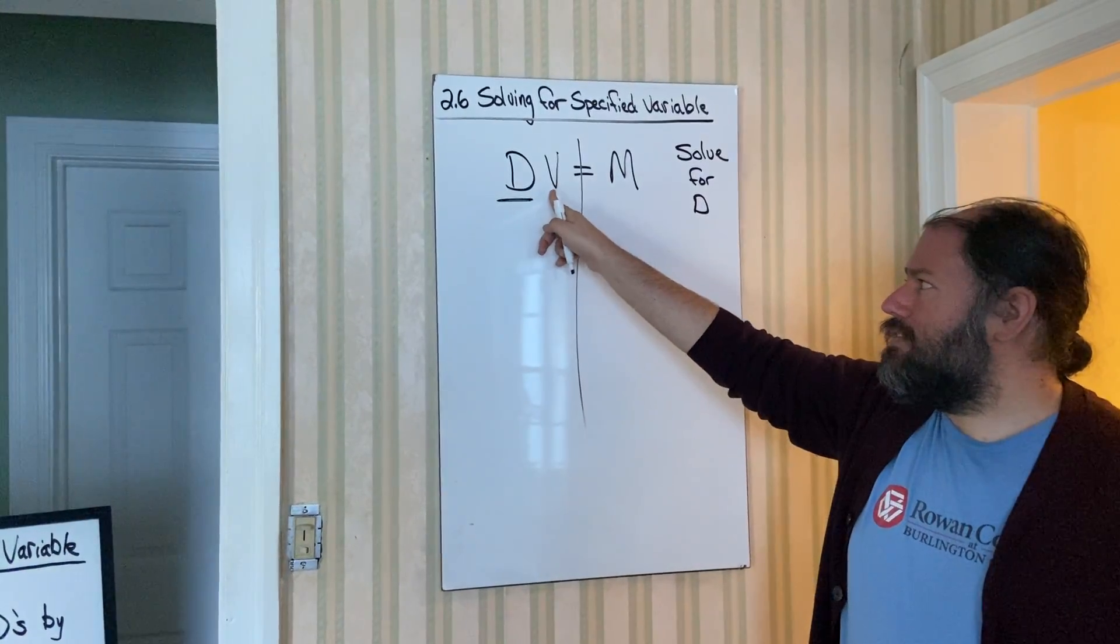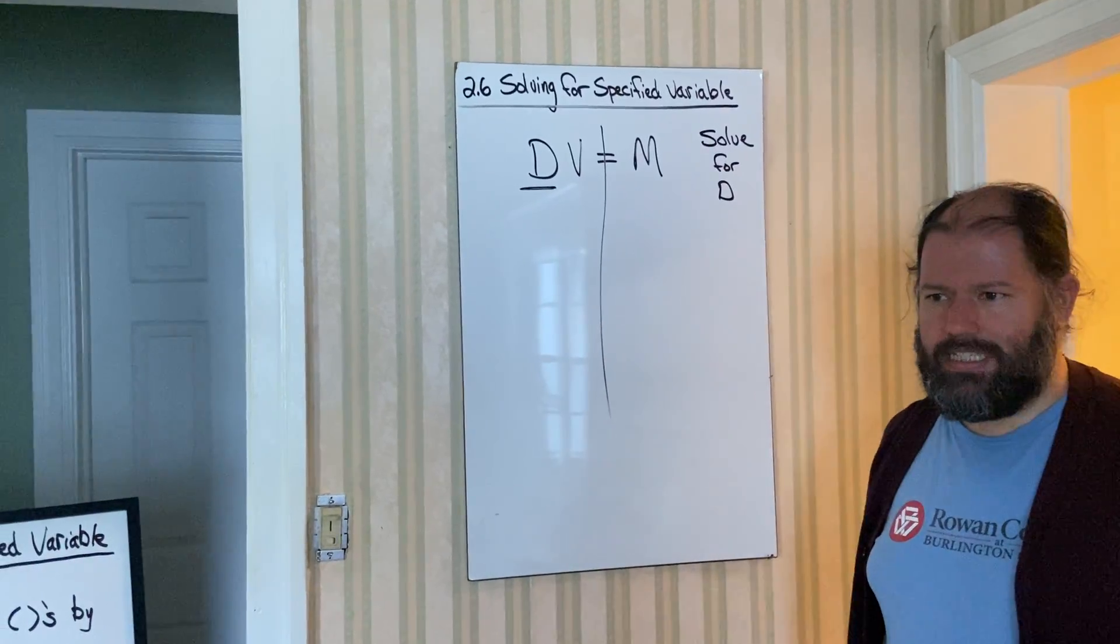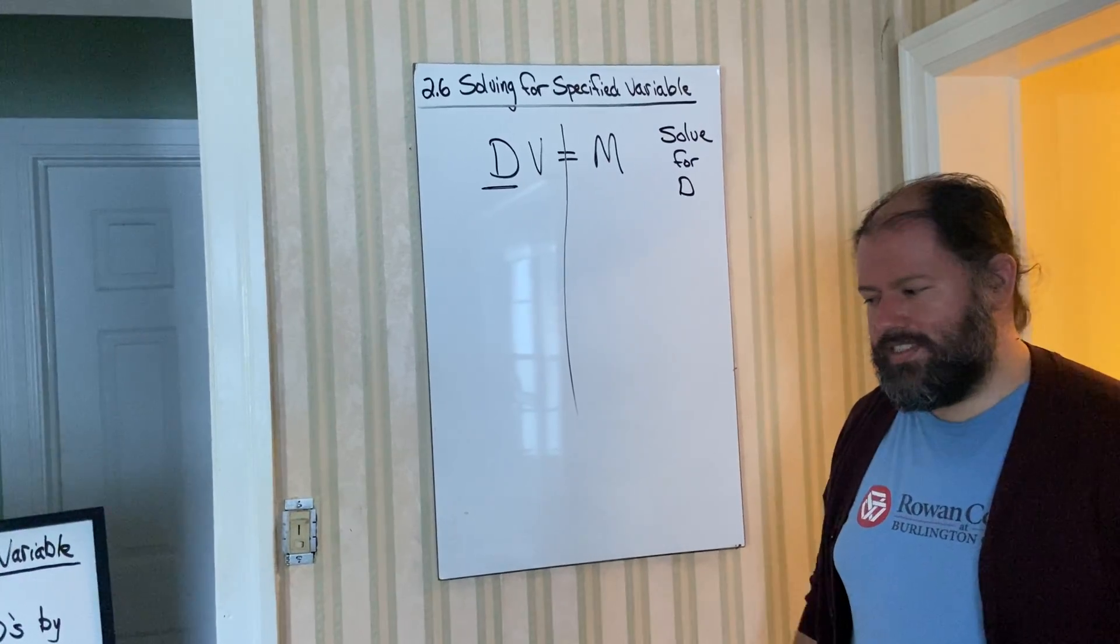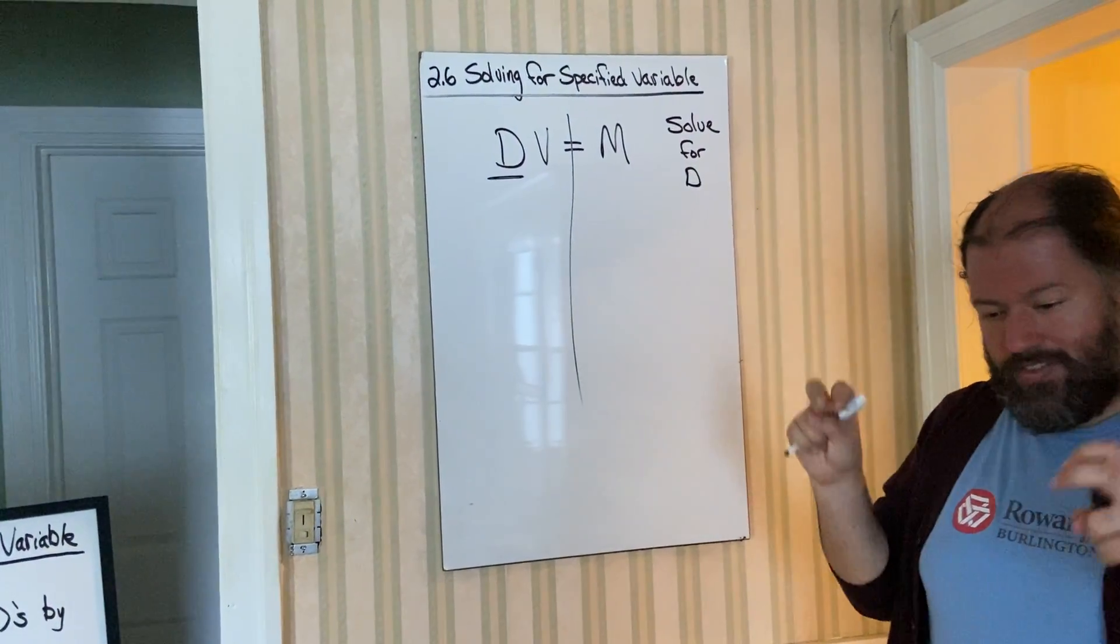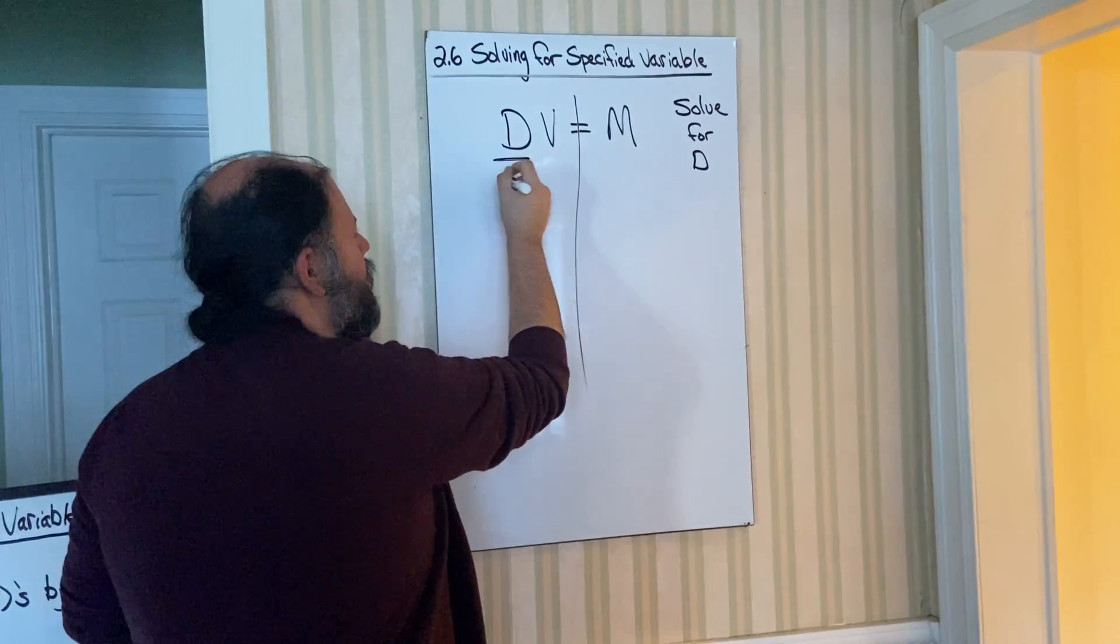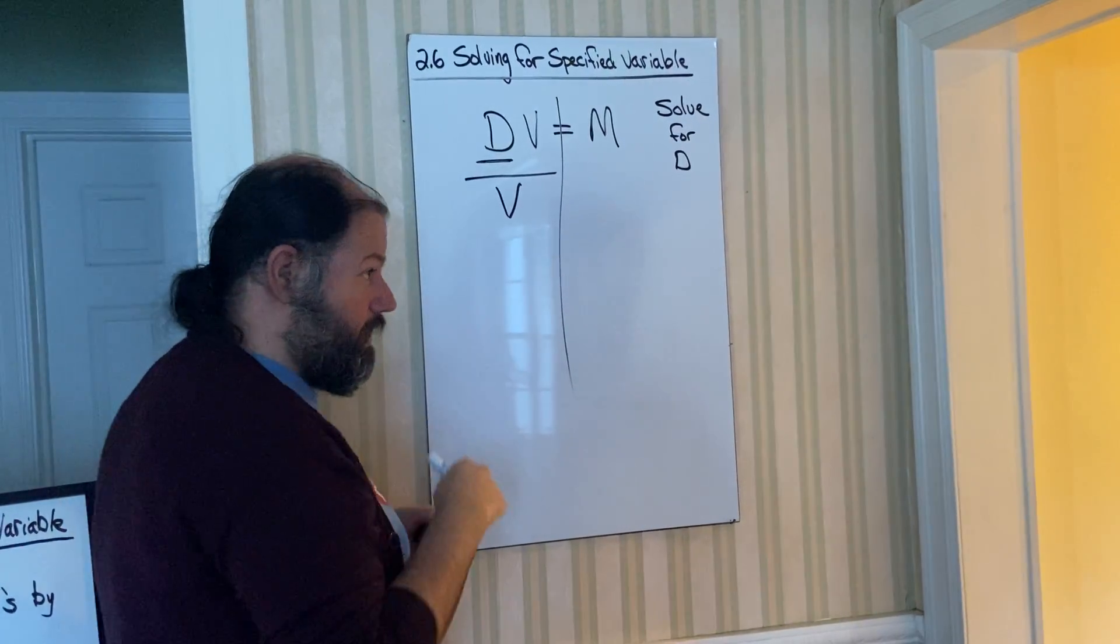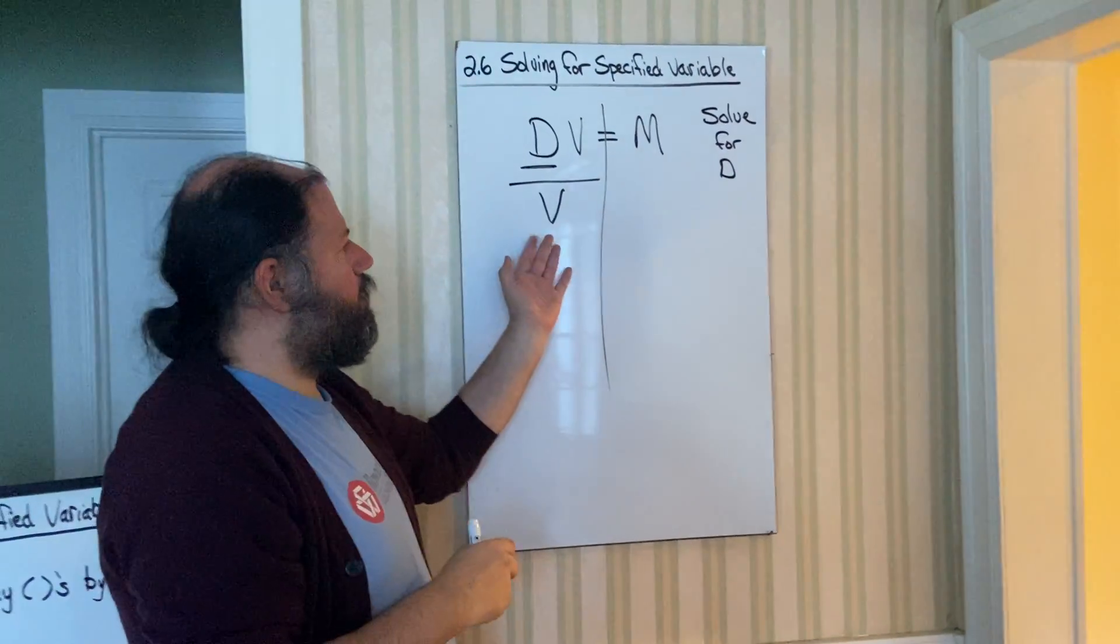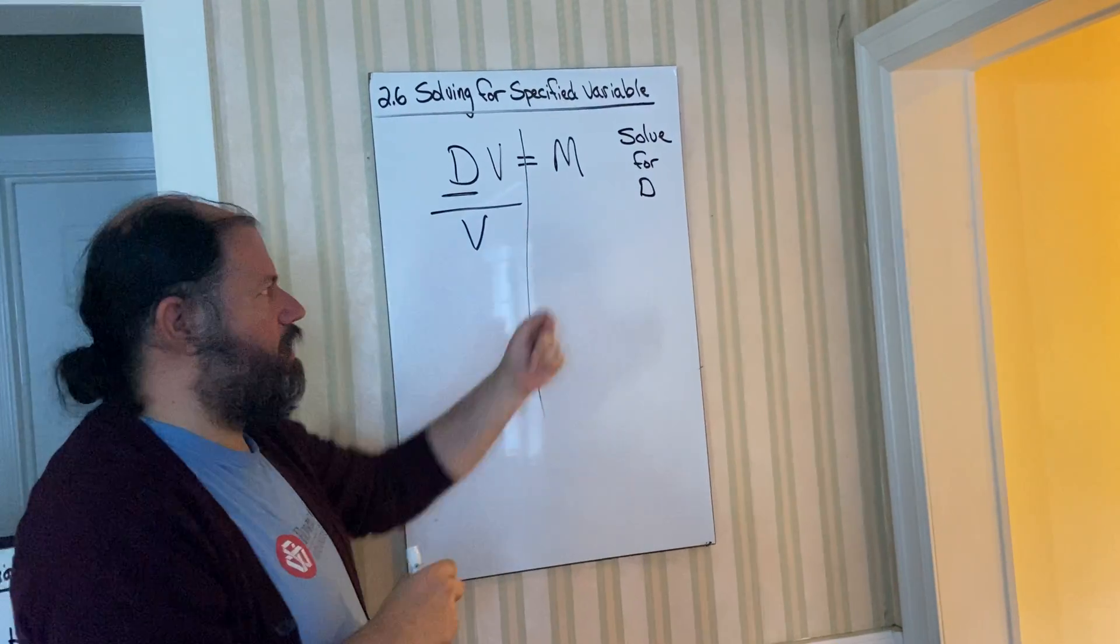But, we do have this V that is multiplied with the D. So, how do we get rid of the letter V? We're going to do the divorcing step. So, even though it doesn't look like a coefficient, we're going to treat it as a coefficient. We're going to divide both sides by the letter V. Remember, the divorcing step and the moving step, whatever you do to the one side equation, you have to do to the other. So, if I'm going to divide this side by the letter V, of course, I'm going to have to divide this side by the letter V.